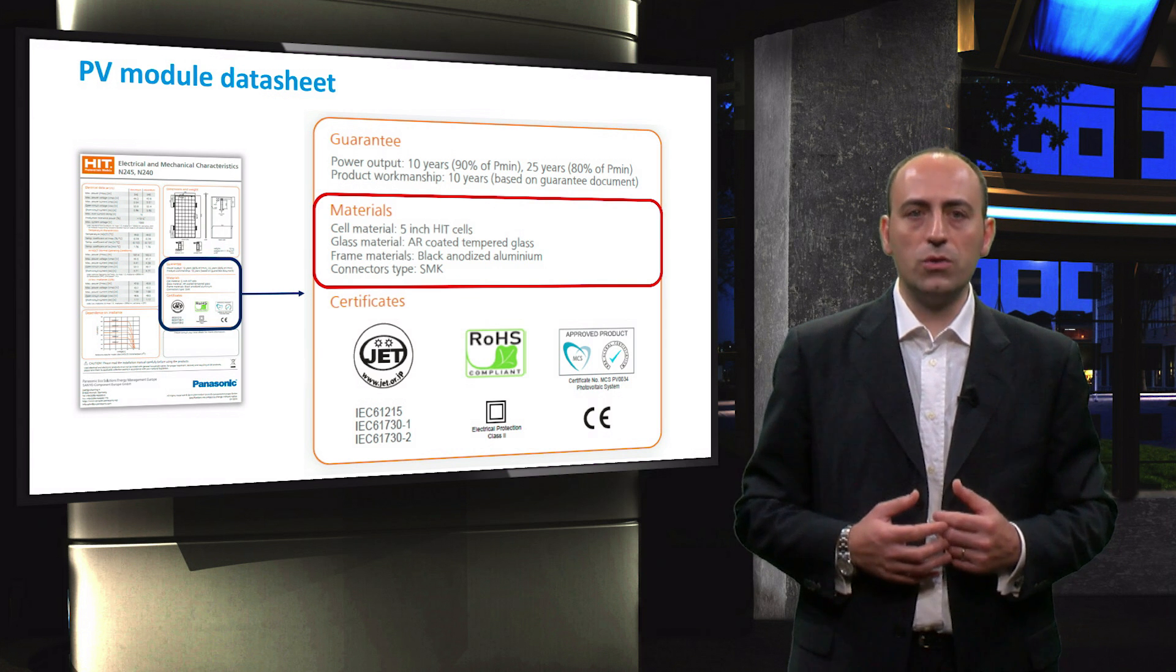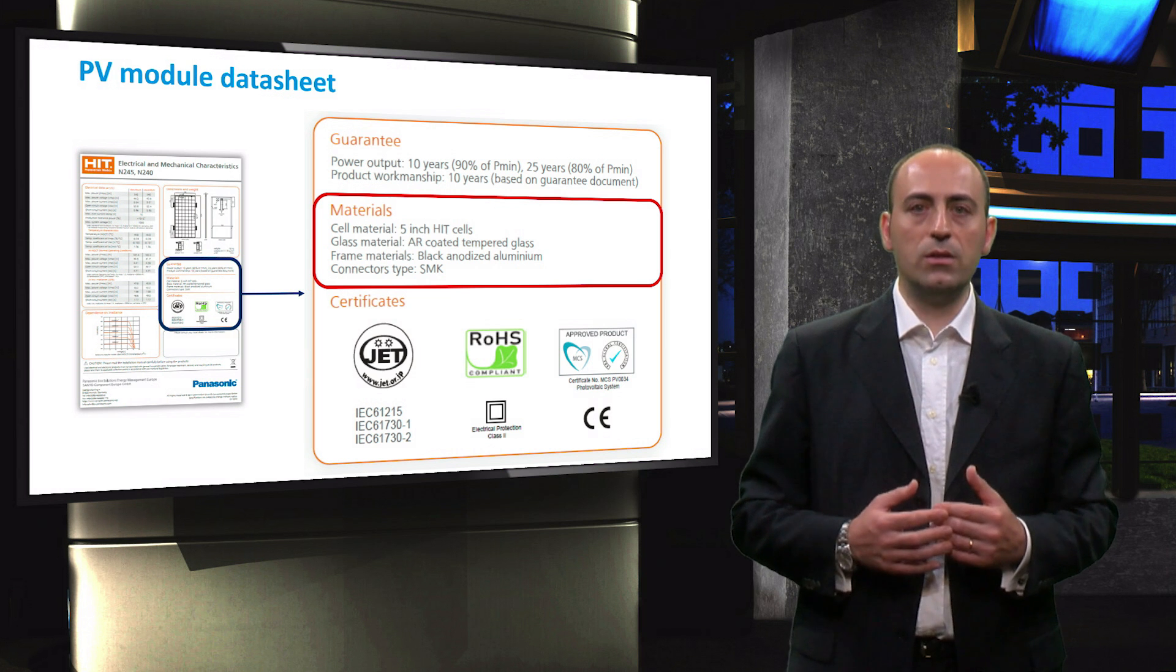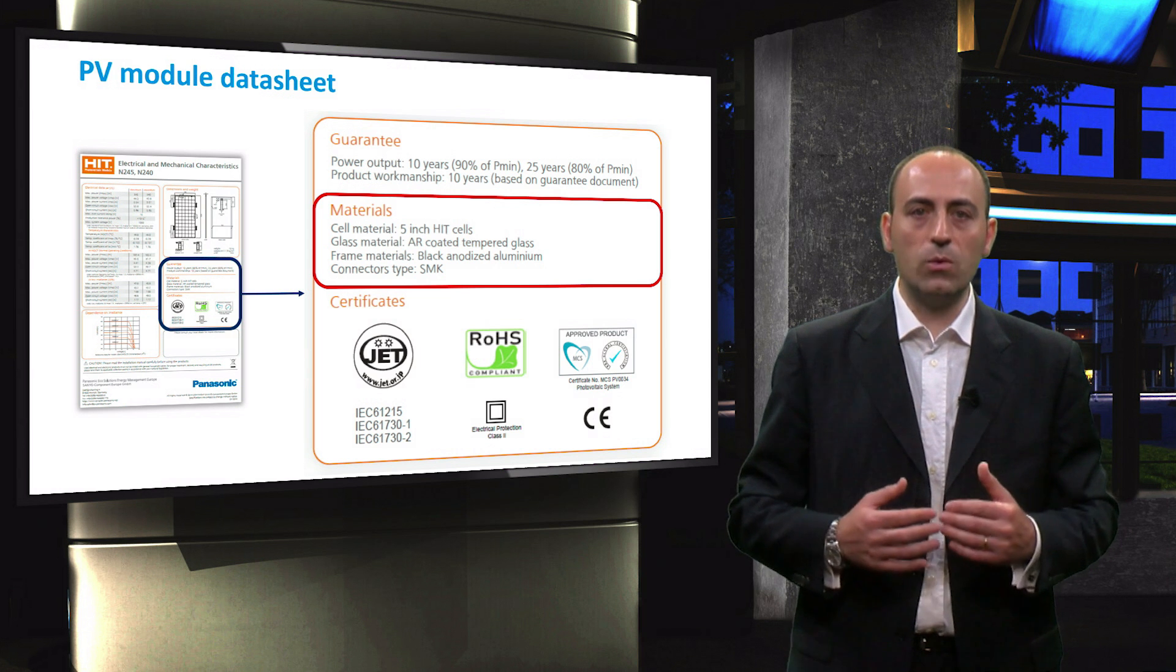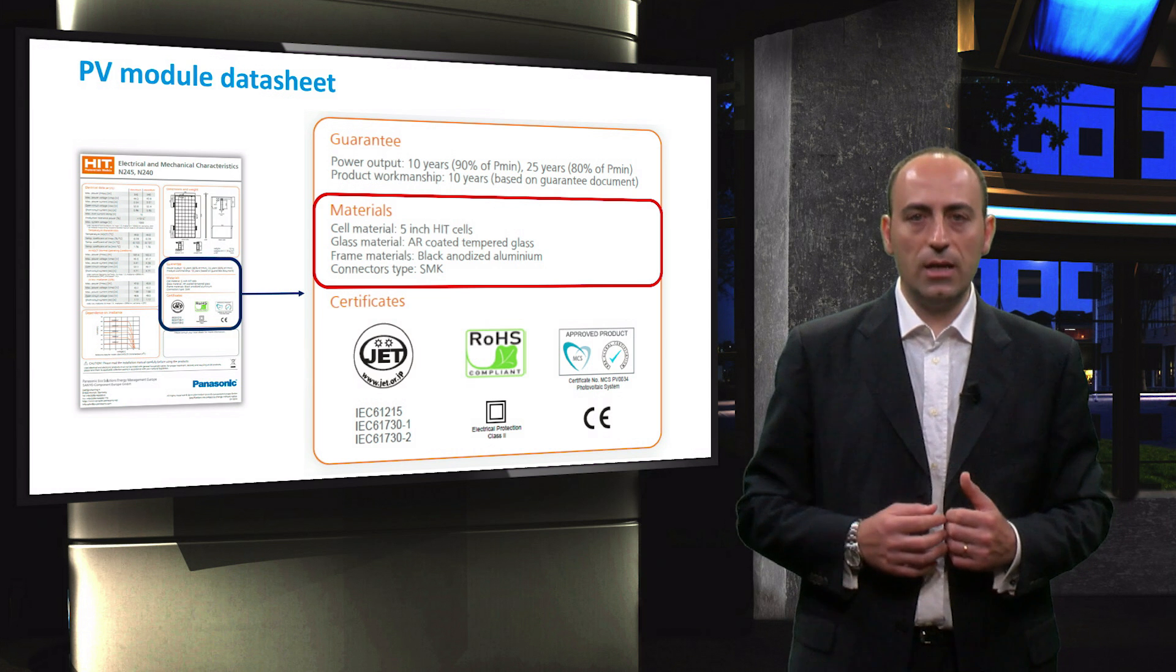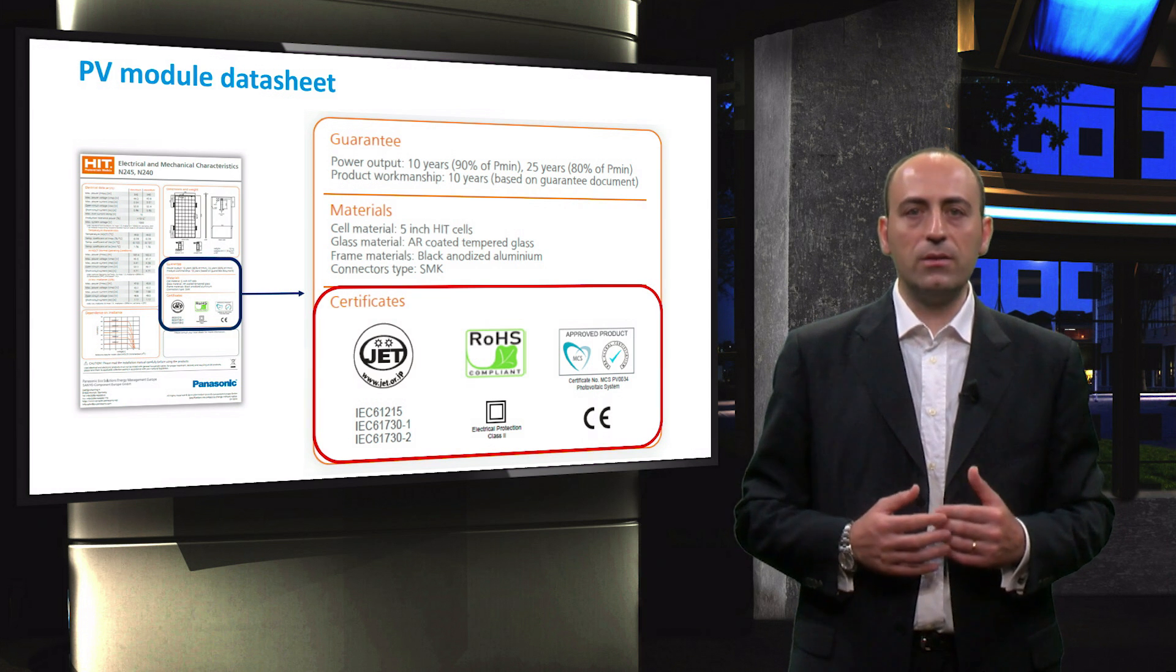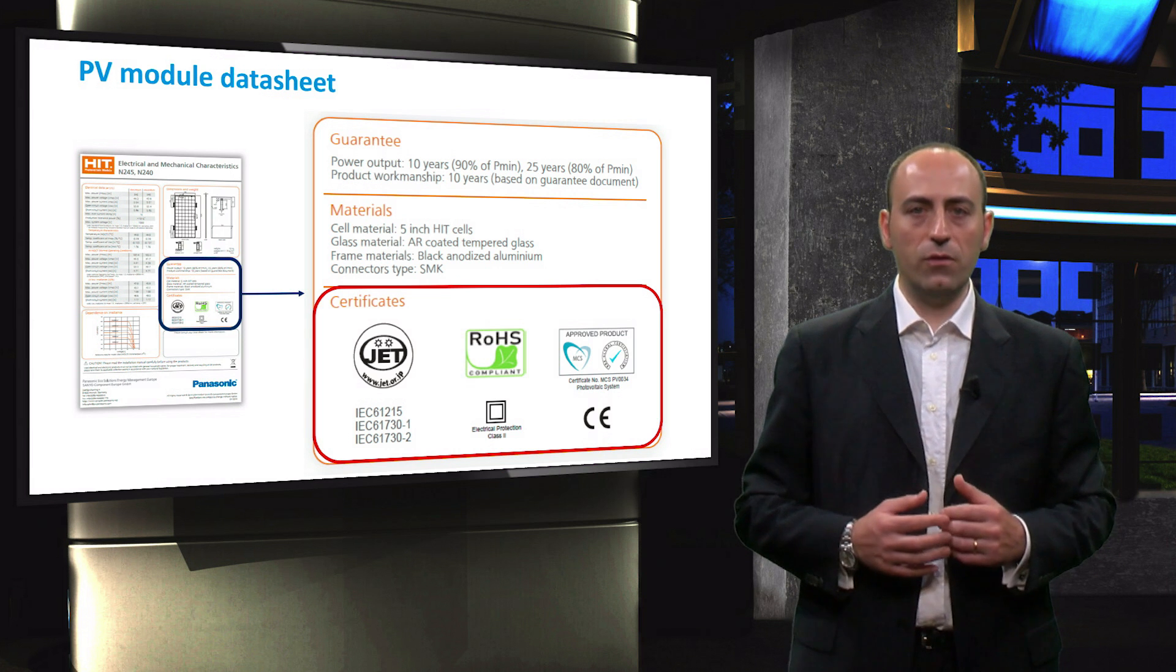Then, the various materials composed in the modules are released from the solar cells, which are heterojunctions with the intrinsic thin layer encapsulated in anti-reflection glass, to the frame that is realized in aluminum. Last part deals with the standard certificates, which we will see in more details further on.